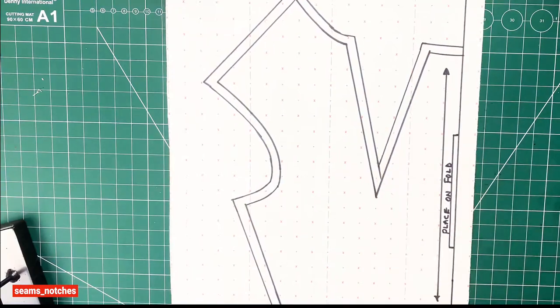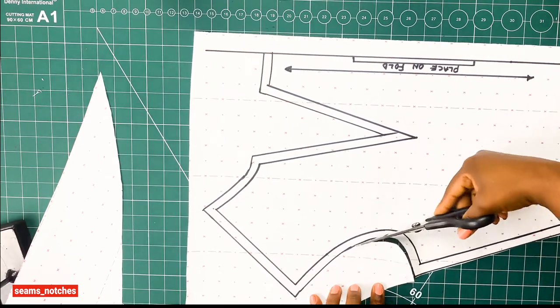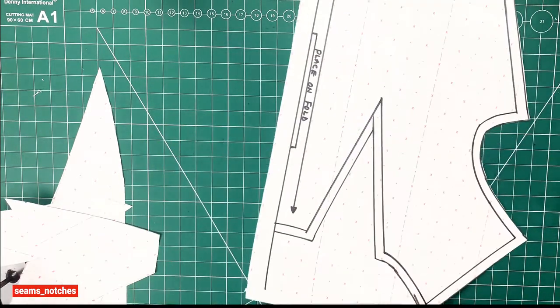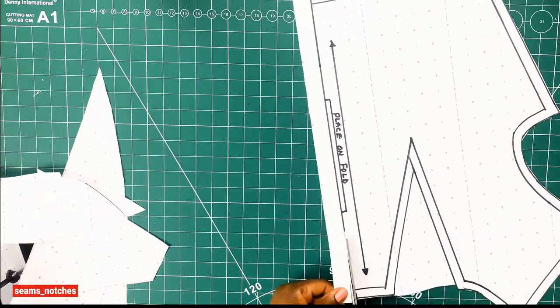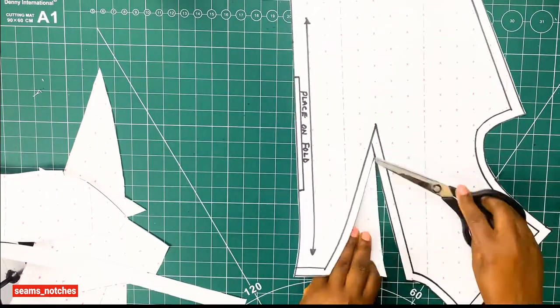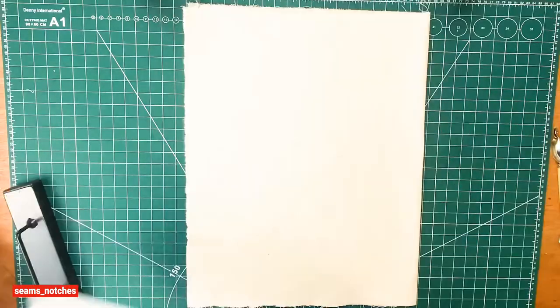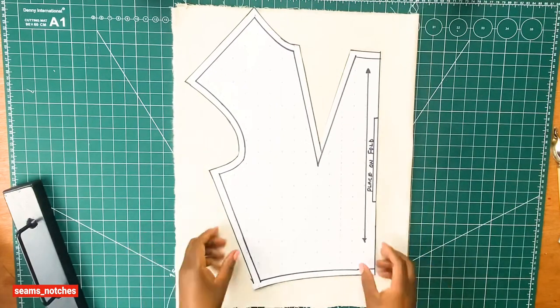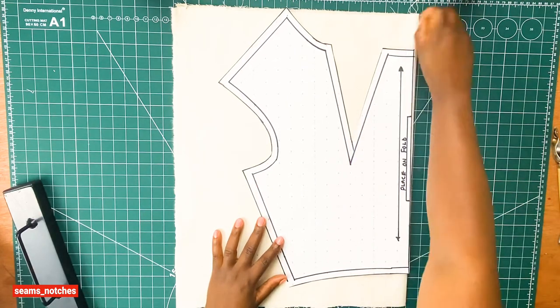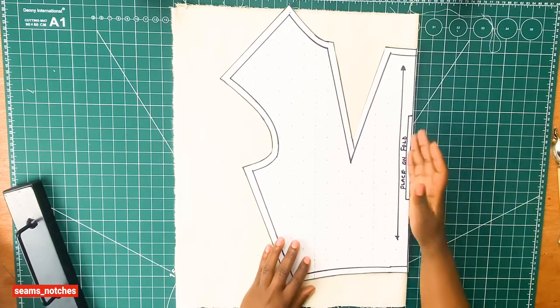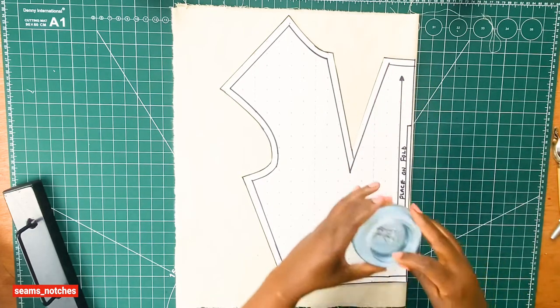Once we are done adding our seam allowance, we need to get our paper scissors to cut out our new pattern. Now our pattern is ready. We need to place it on our fabric. The fabric I'm using today is called a calico. In the United States and some parts of the world, you call it muslin. Place your pattern on that fabric and be sure to place it on fold.